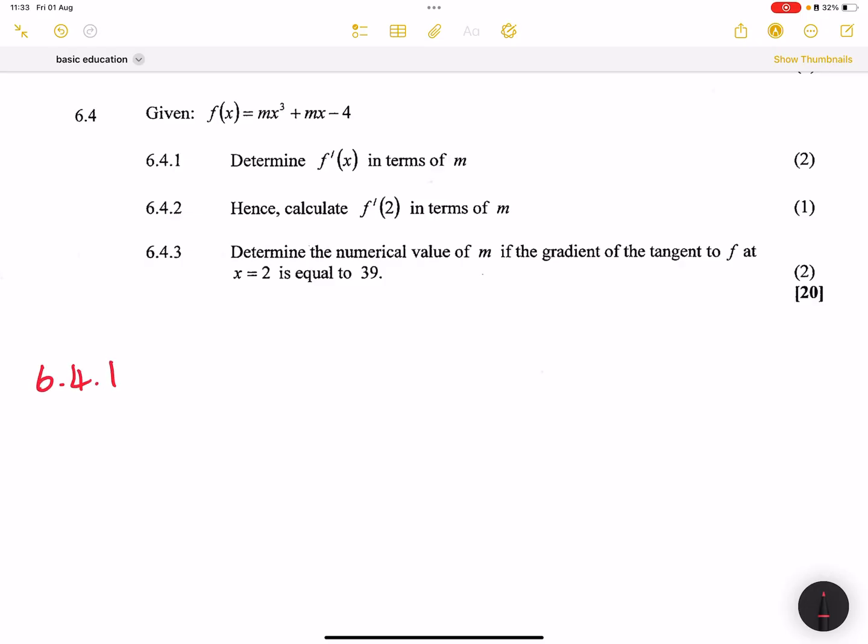So f'(x) - any other variable that is not x is actually a constant. So we are going to say this is going to be 3mx² plus m. That's what the derivative would look like.